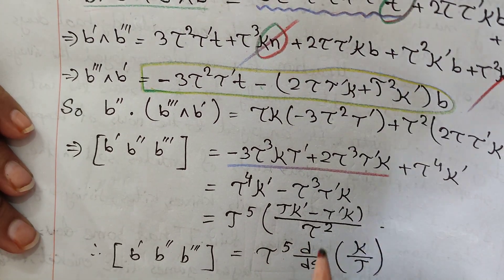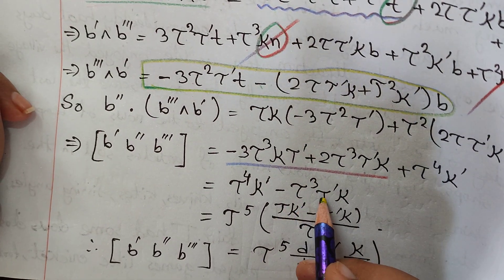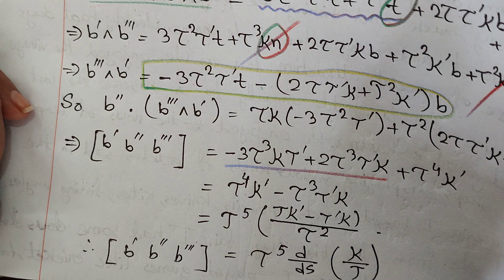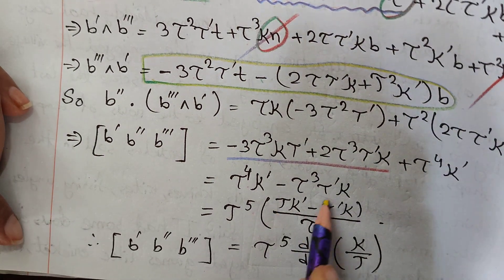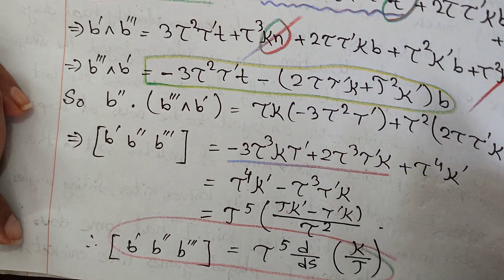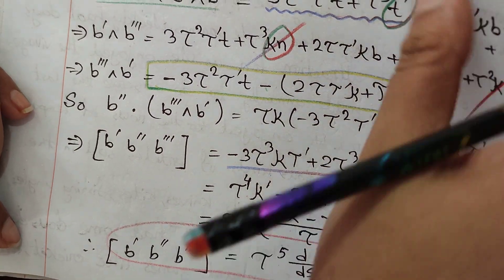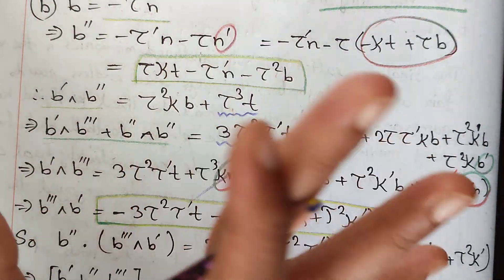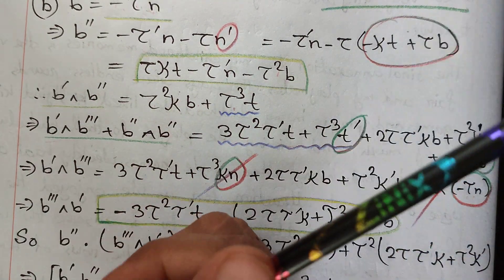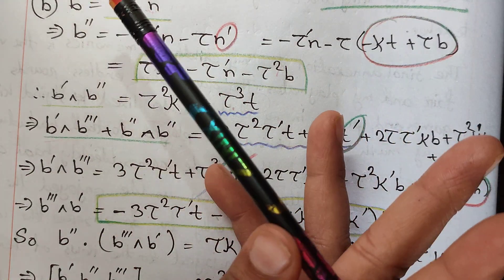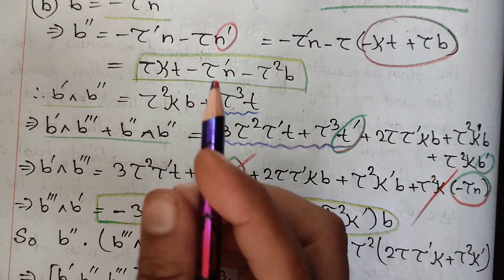This function: minus τ cube, τ prime equals τ square. This is the triple product. I have a good idea of this but I have a problem with this. I will try this.